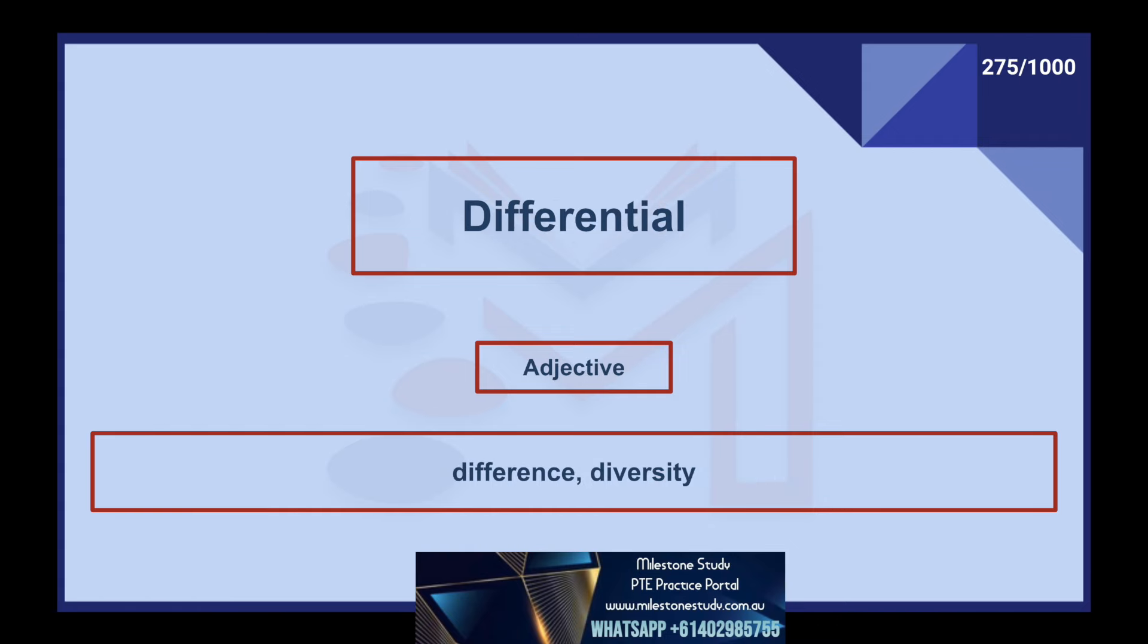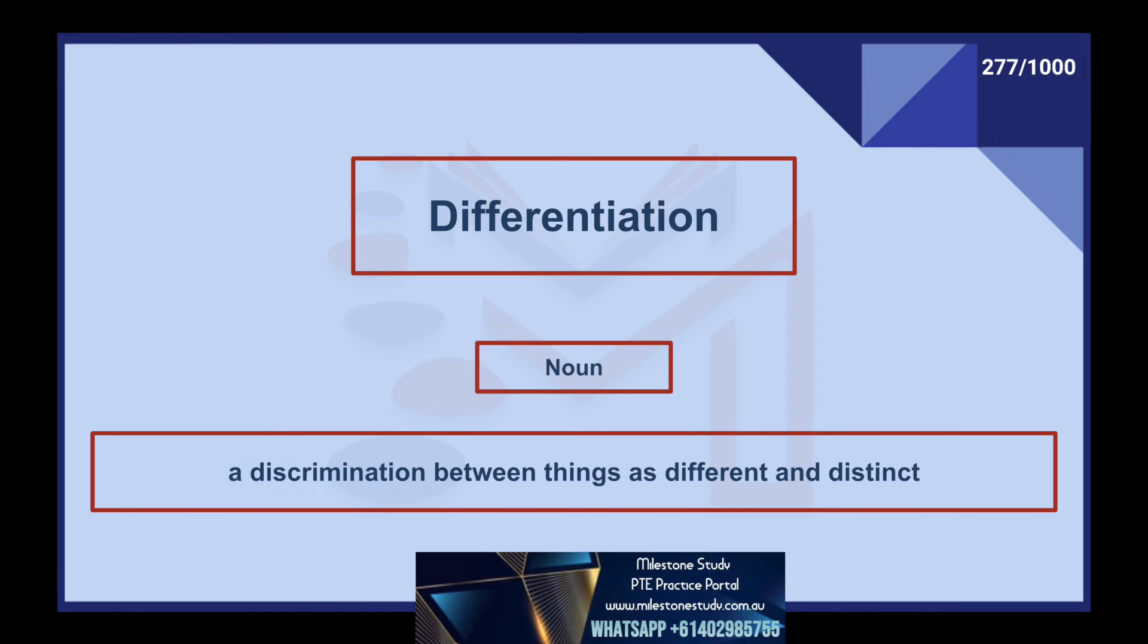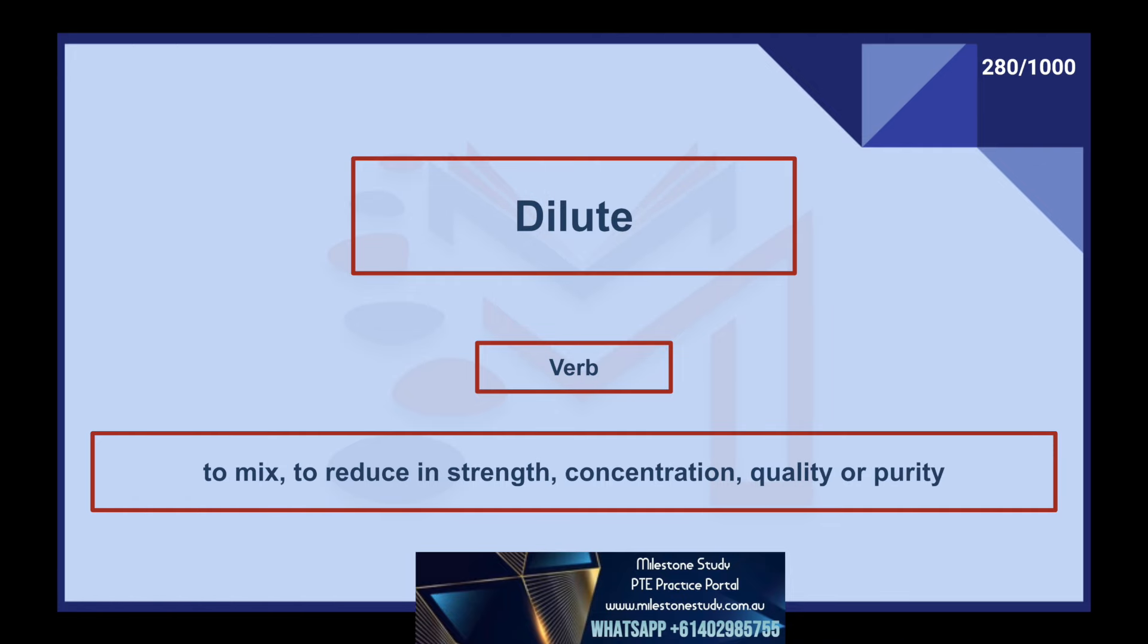Differential, adjective: difference, diversity. Differentiate, verb: to see or show a difference between things. Differentiation, noun: a discrimination between things as different and distinct. Diffusion, noun: the movement of light in many directions. Dilemma, noun: a position in which a person must make difficult choice. Dilute, verb: to mix, to reduce in strength, concentration, quality or purity.